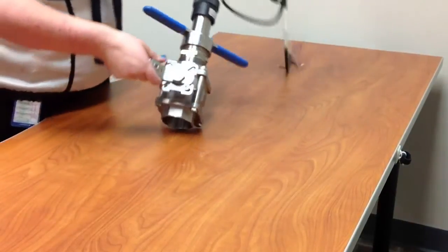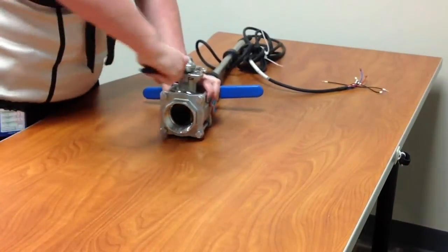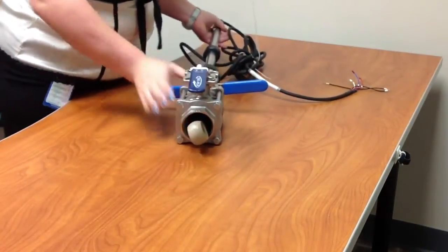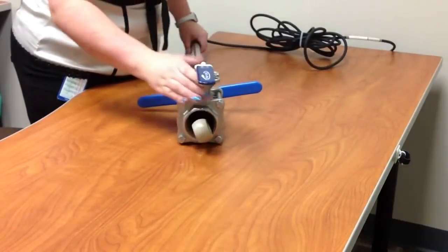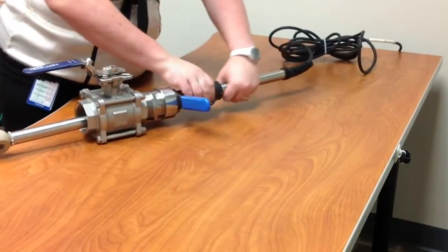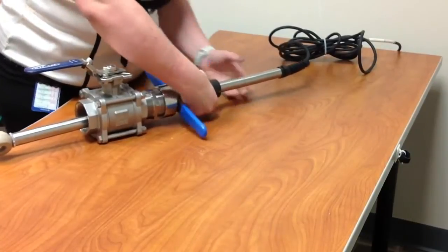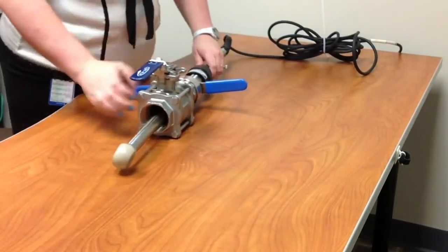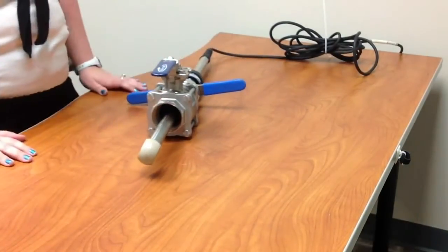you can then open your ball valve, push your PR-10 assembly into your process to your max insertion depth, and then you'll take the locking screw and lock it. Then tighten it into place, and that basically keeps your PR-10 so it can't go out any further. And that's your installation.